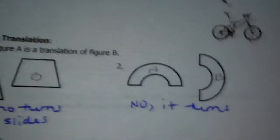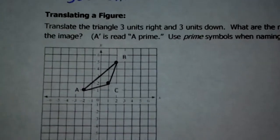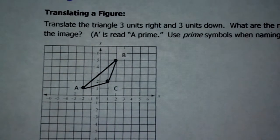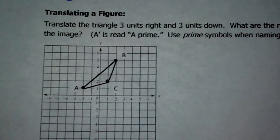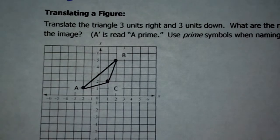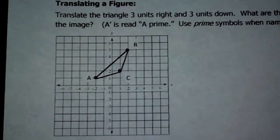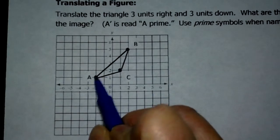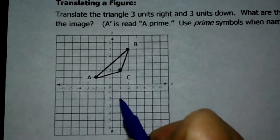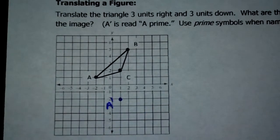Now what I'd like you to be able to do is actually translate a figure. Here I have a triangle. It says translate the triangle three units right and three units down. What are the new coordinates of the image? There's a little something about the image — I said A and then there's this little dash, that's A prime. We use prime symbols when we're naming an image. So when we list the coordinates of the new image, we put those little prime tallies right after it.